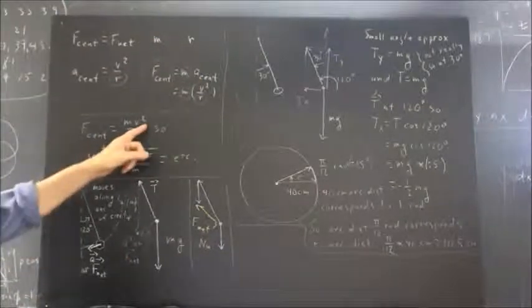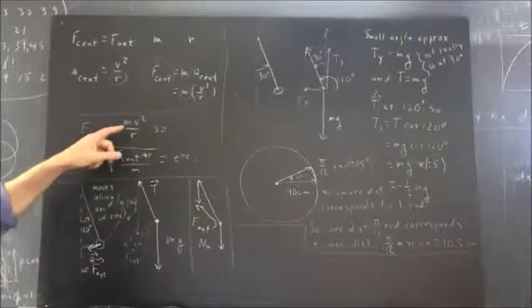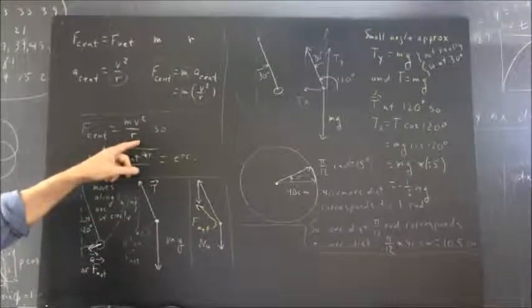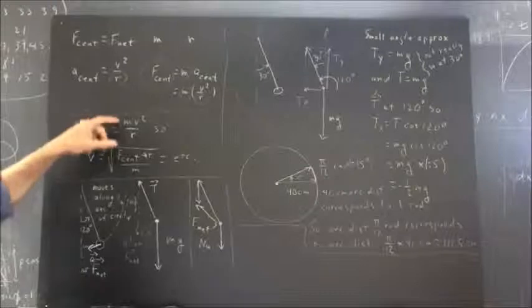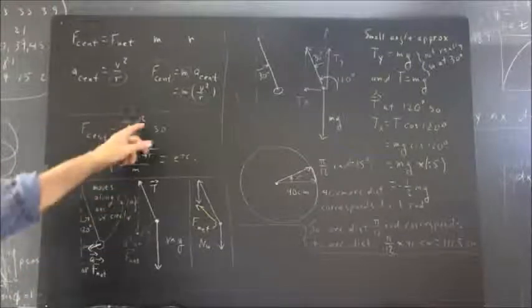Okay, so, if we want to solve for V, we've got centripetal acceleration was M, V squared over R. We know centripetal acceleration. We know M. We know R. We want to solve for V.